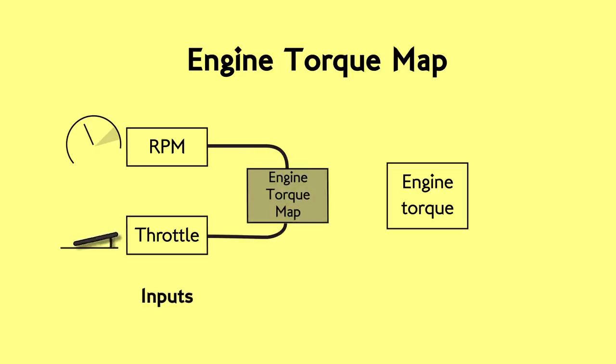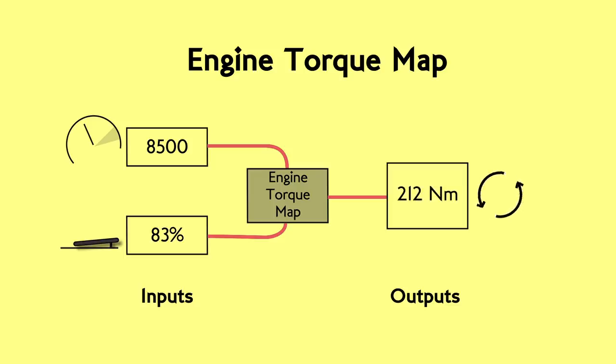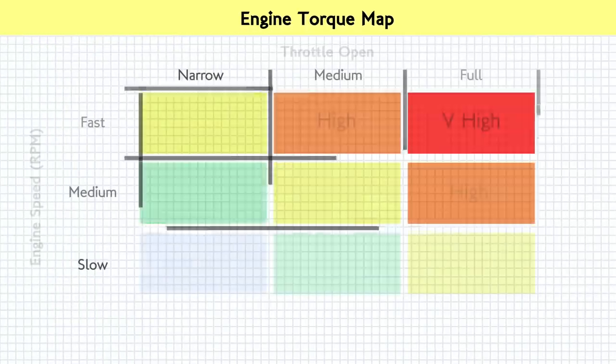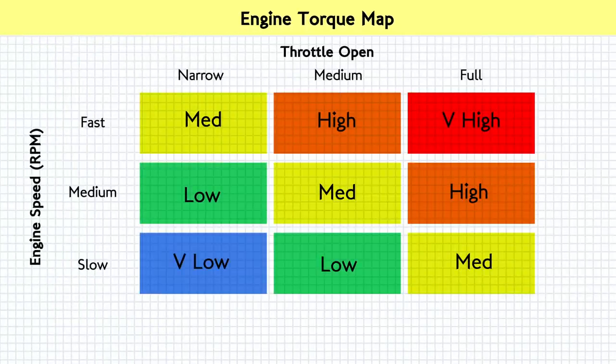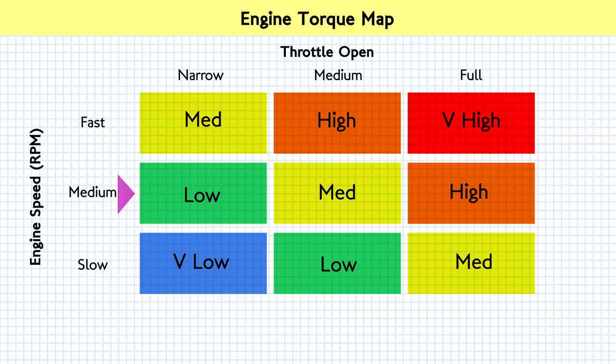The torque, which is strictly how much turning force the engine is producing, is an output. So if you know your RPM and throttle level, the map will tell you the engine torque. So let's imagine a very simple scaled down version of this engine map. We can model it to see what would happen at slow, medium and fast RPMs. And we can also look at narrow, medium and full throttle levels. This gives us a nice table with nine possible scenarios.